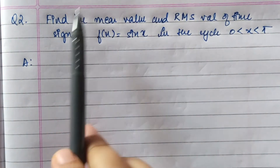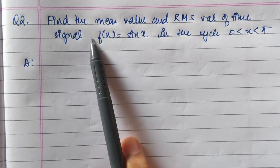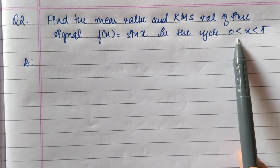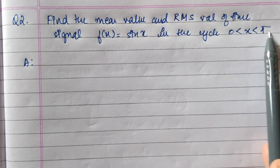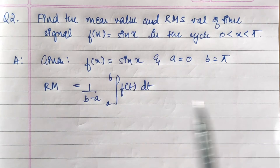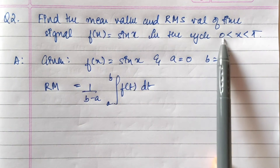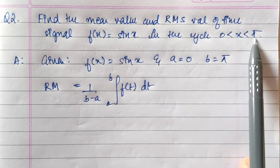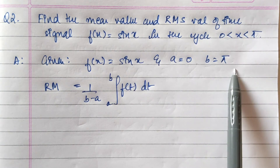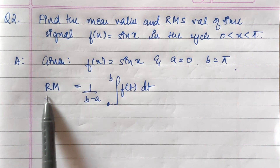Let's take another question on this topic: find the mean value and the RMS value of the time signal f(x) = sin(x) in the cycle when x belongs to [0, π]. Given f(x) = sin(x), the lower limit is a = 0 and the upper limit is b = π.